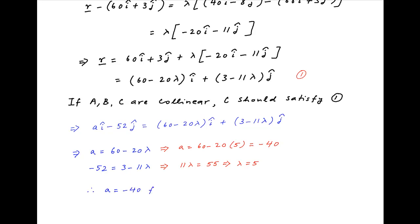Therefore the value of A should be equal to minus 40 for the points A, B and C to be collinear which is the required answer.